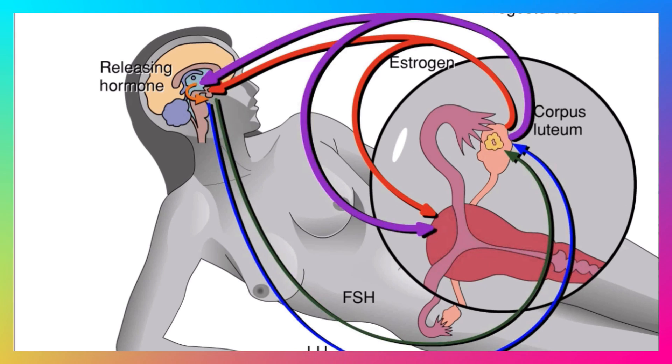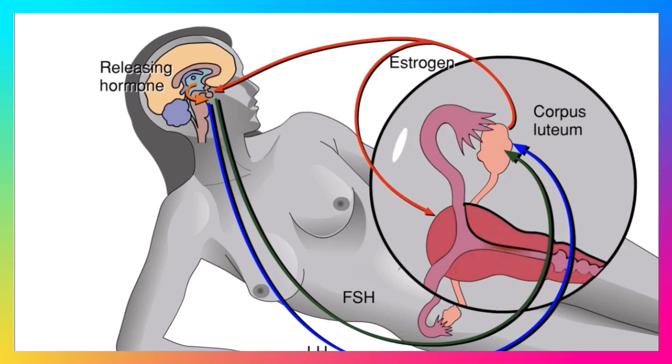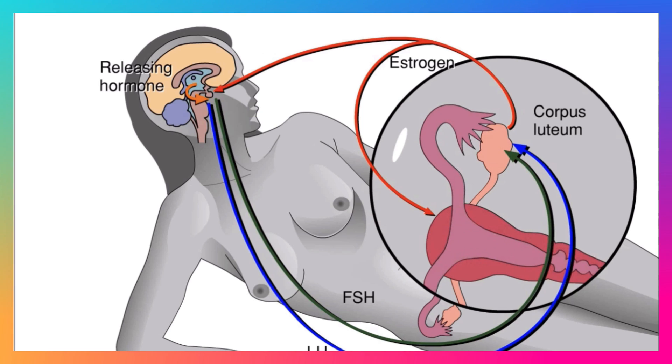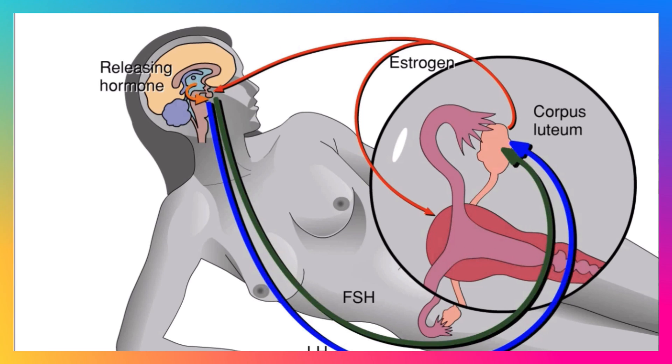So, if fertilization doesn't occur, the corpus luteum degenerates. Without its hormones, the lining of the uterus breaks down and a new follicle starts to grow.